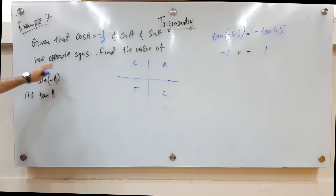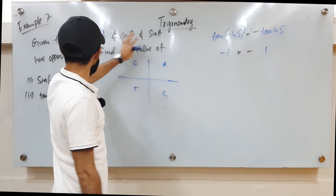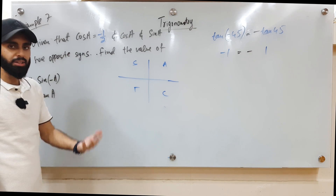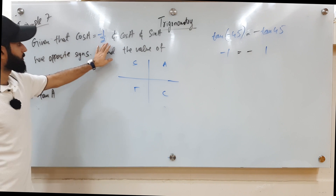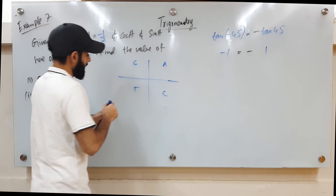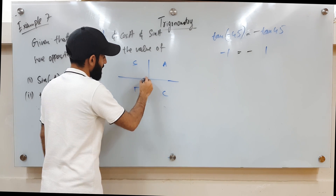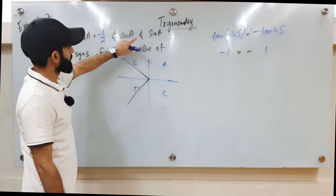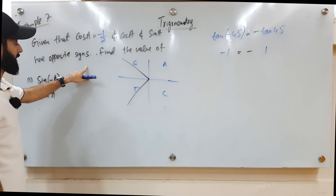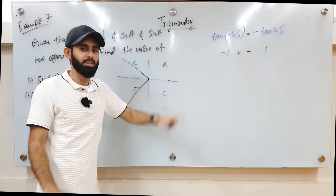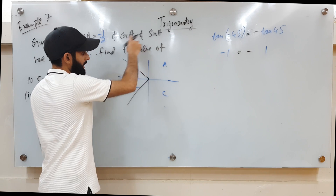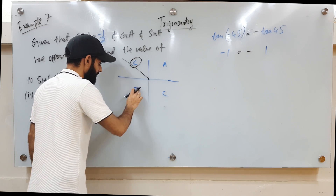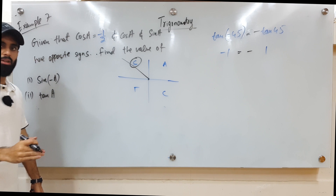Here's example 7: given that cos a equals negative one-half and cos a and sine a have opposite signs, find sine of negative a and tan of a. First we need to determine what quadrant we're in. Cos is negative in the second or third quadrant. The question says cos and sine have opposite signs, meaning sine is positive. The only quadrant where cos is negative and sine is positive is the second quadrant, so we are in the second quadrant.